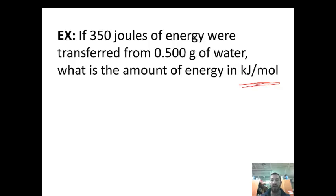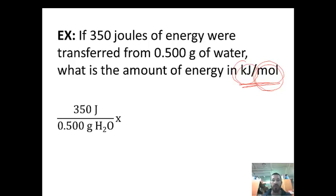So what you want to do is put whatever you're changing to kilojoules on the top and factor label that, and then moles, whatever we're changing to moles, will go in the bottom. So when we set this up, we're going to put 350 joules on the top of our factor label and 0.5 grams on the bottom of our factor label. That will be our first step.